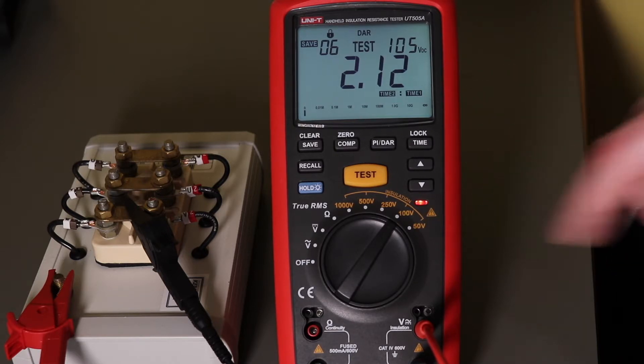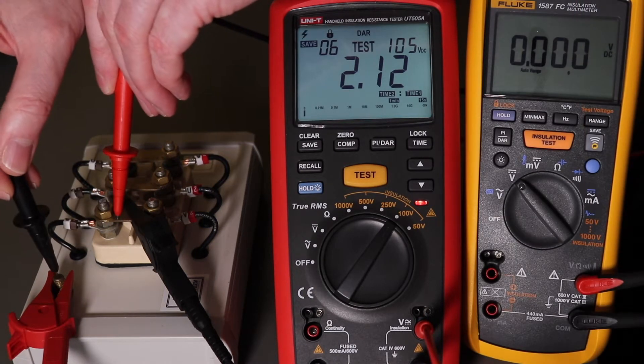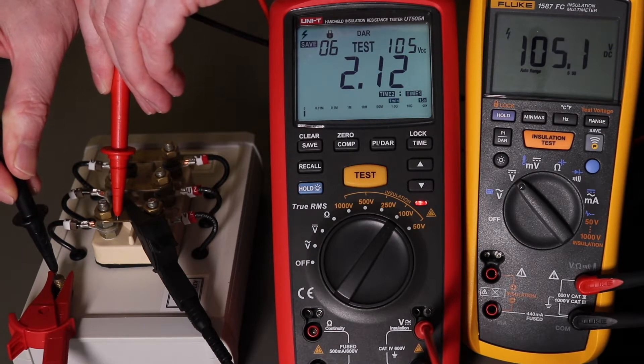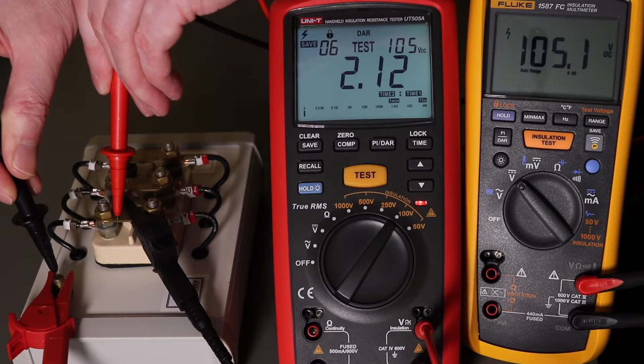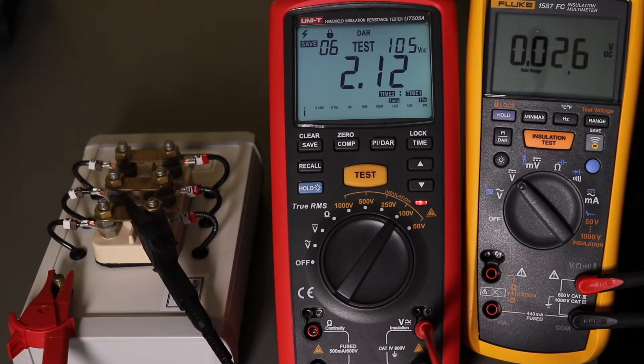And it's still got voltage coming out. Measure the output there - yeah, there we go. You can see 105 volts output on there. So the meter is still on but it's come to the end of the DAR test and it should have stopped, really.